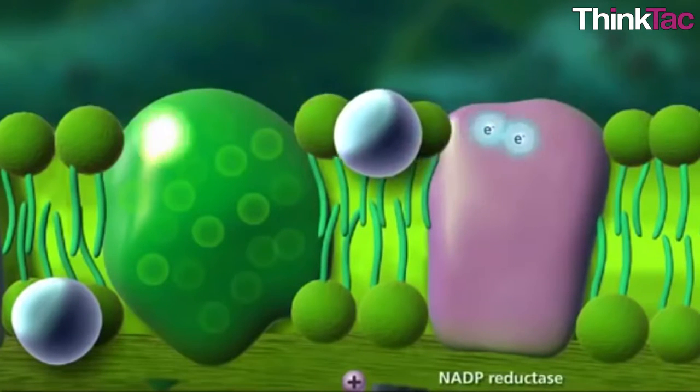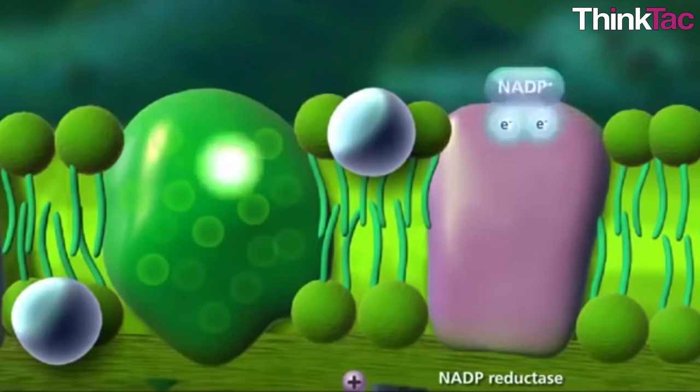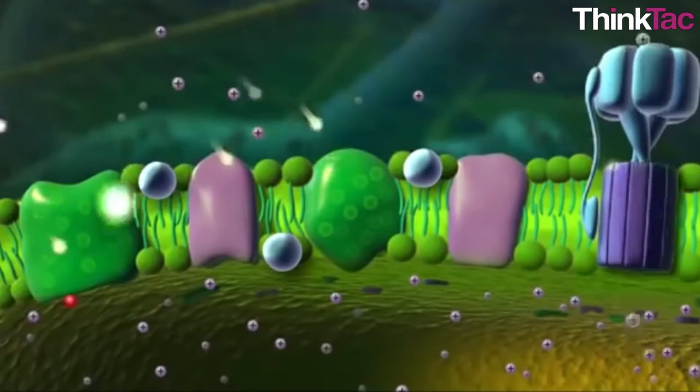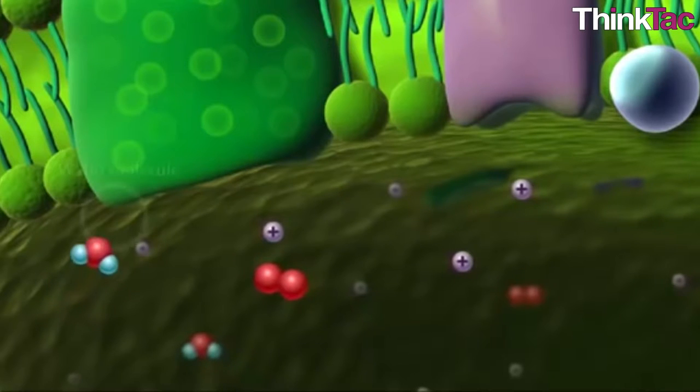However, the ejected electrons cannot be kept out from these special chlorophyll molecules. Electrons must be fed back to replace those ejected electrons. These electrons come from water, resulting in oxygen being evolved.